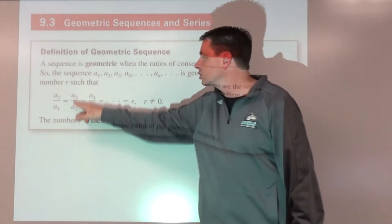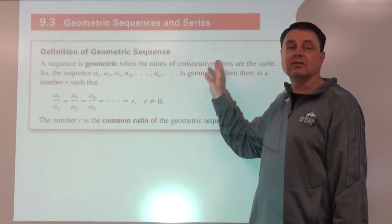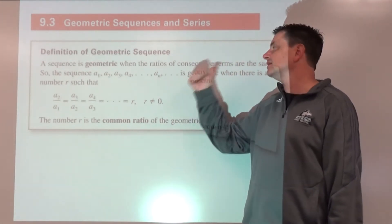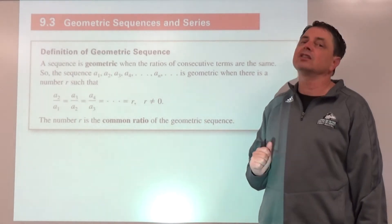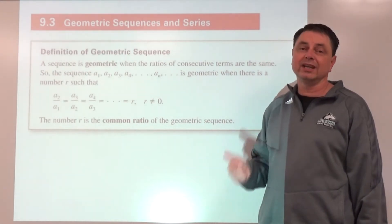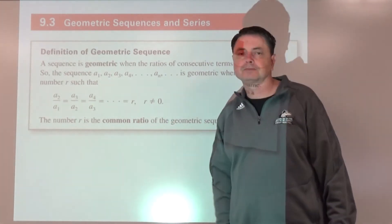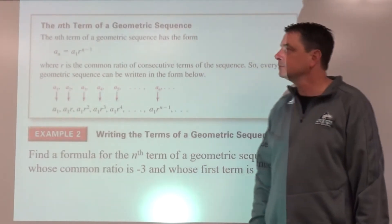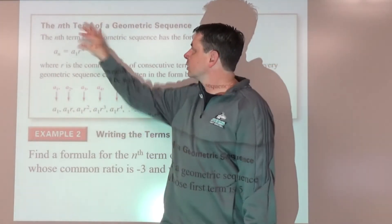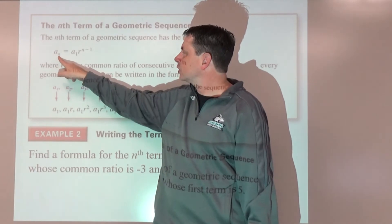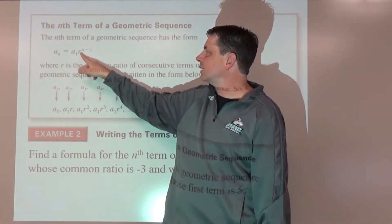Take the third term divided by the second term, or the hundredth term divided by the 99th term. It does not work in the other direction — you will get the reciprocal, which is not the same thing. The formula for the nth term of a geometric sequence is the first term times the common ratio to the power of n minus 1.